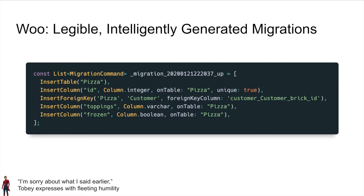DART's strongly typed system allows us to infer from a given class what it would need. Say this frozen member on pizza — we know it's a boolean, we can just say when you insert this column, make it a boolean type. That's a slight misnomer because SQLite doesn't support booleans; it's more of an integer. Or say we know we're making an association — BRIC will automatically generate a foreign key column name, make it an integer, and associate the pizza table to the customer table. It handles all this behind the scenes.